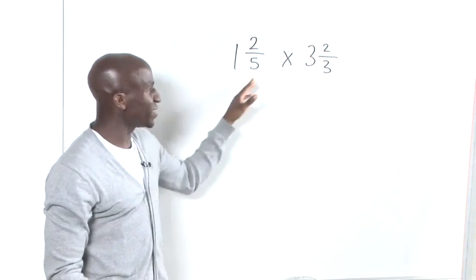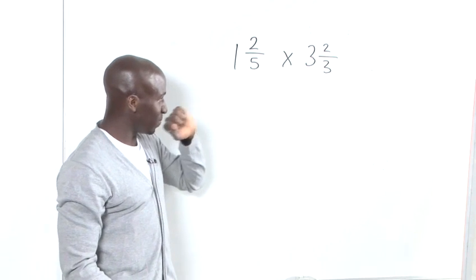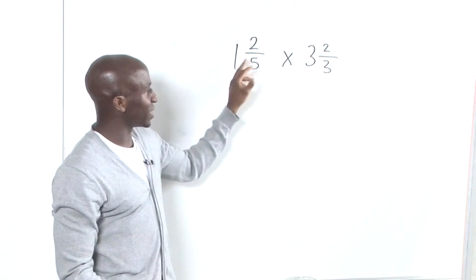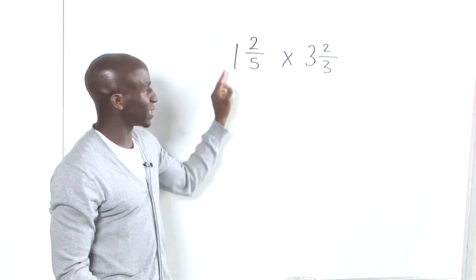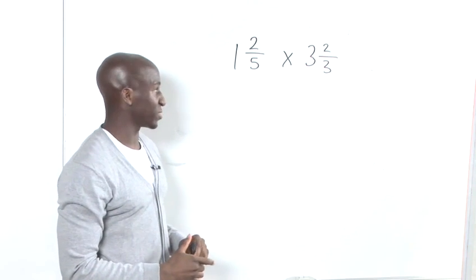So the easiest way to multiply these particular fractions is to convert first of all these mixed fractions into improper fractions.